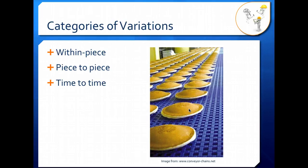Piece-to-piece variation is differences between two or more pancakes. Maybe we have a difference in this pancake's weight versus this pancake's weight, or this pancake's diameter versus this pancake's diameter. Here you're talking about variation between two discrete pieces of product.